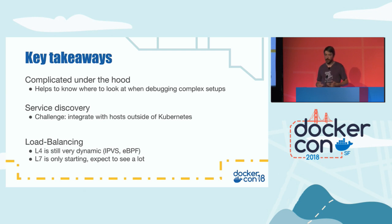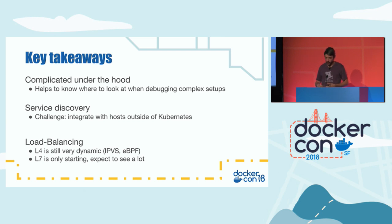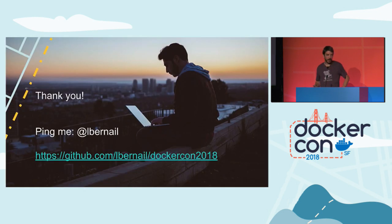Layer 4 load balancing is very stable — we're all using it — but still dynamic: many people are not happy with IP tables and that's why there's so much work on IPVS. eBPF is probably going to be a game changer in that space. Layer 7 load balancing is only starting but will also be a game changer in the future.